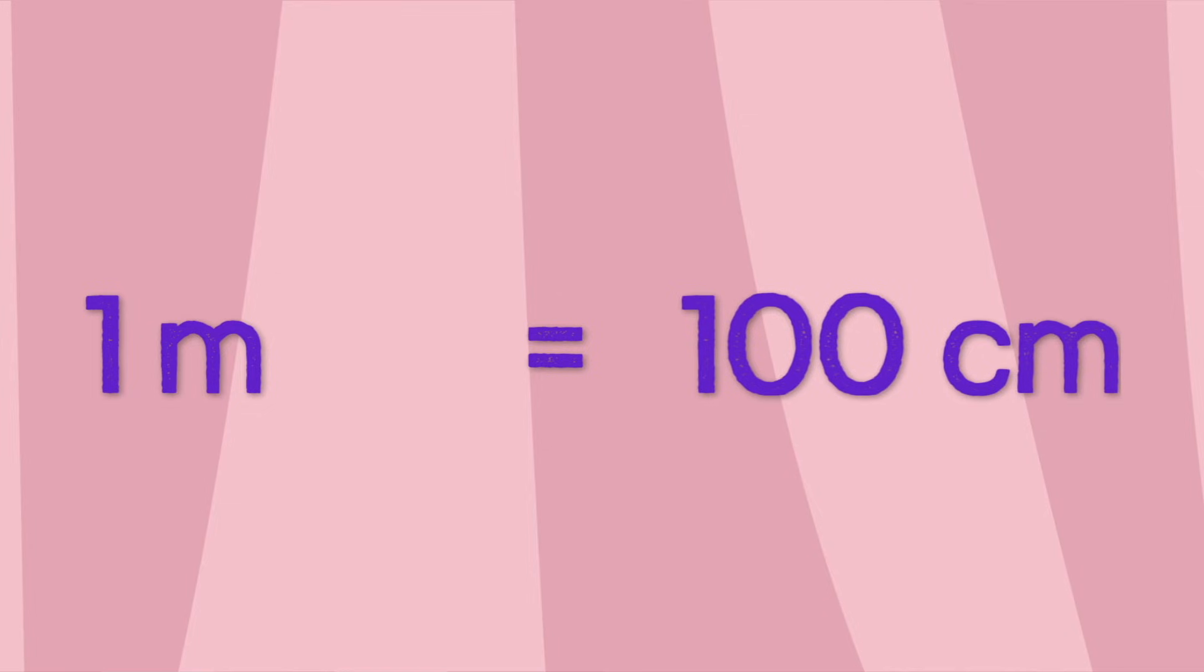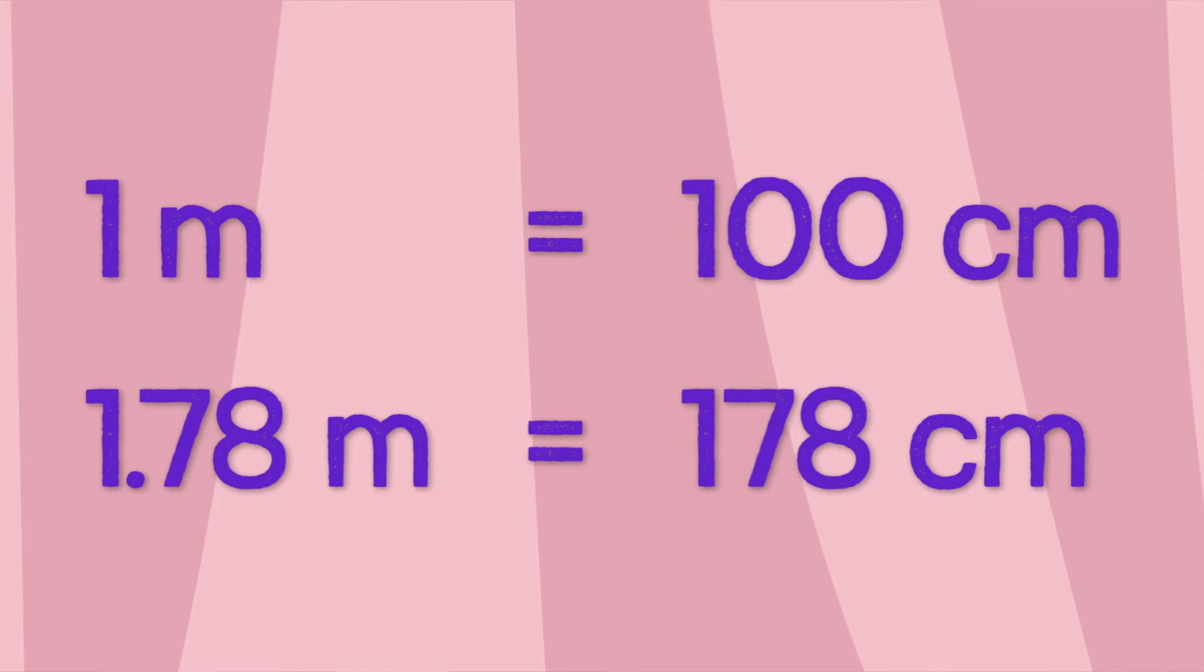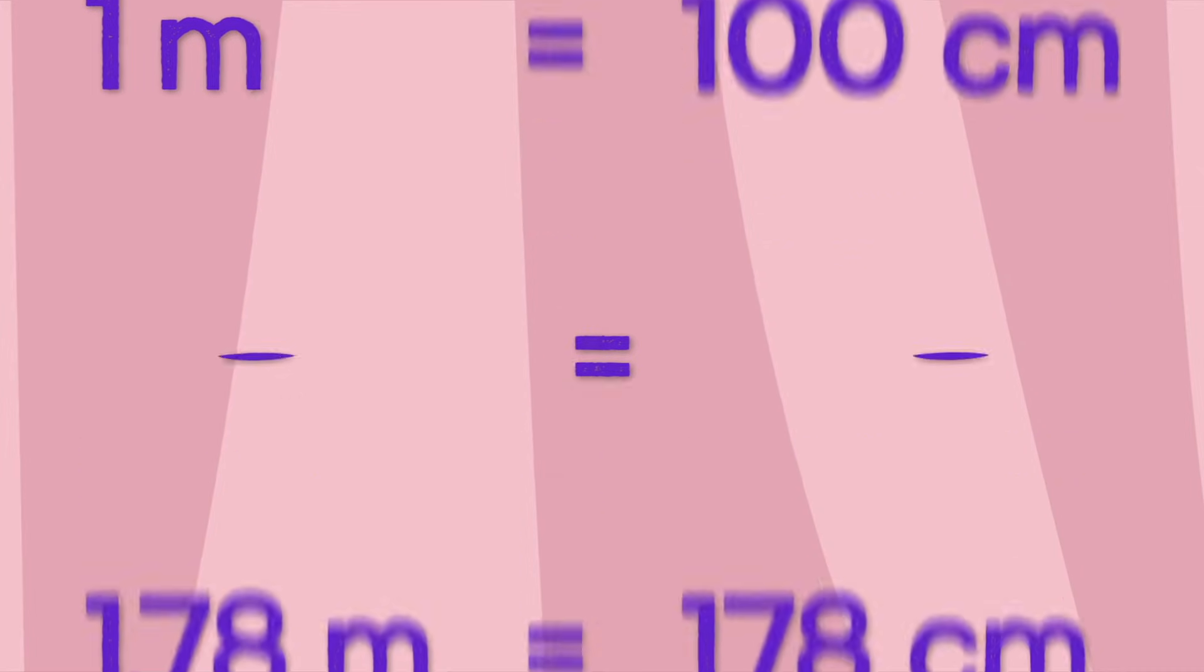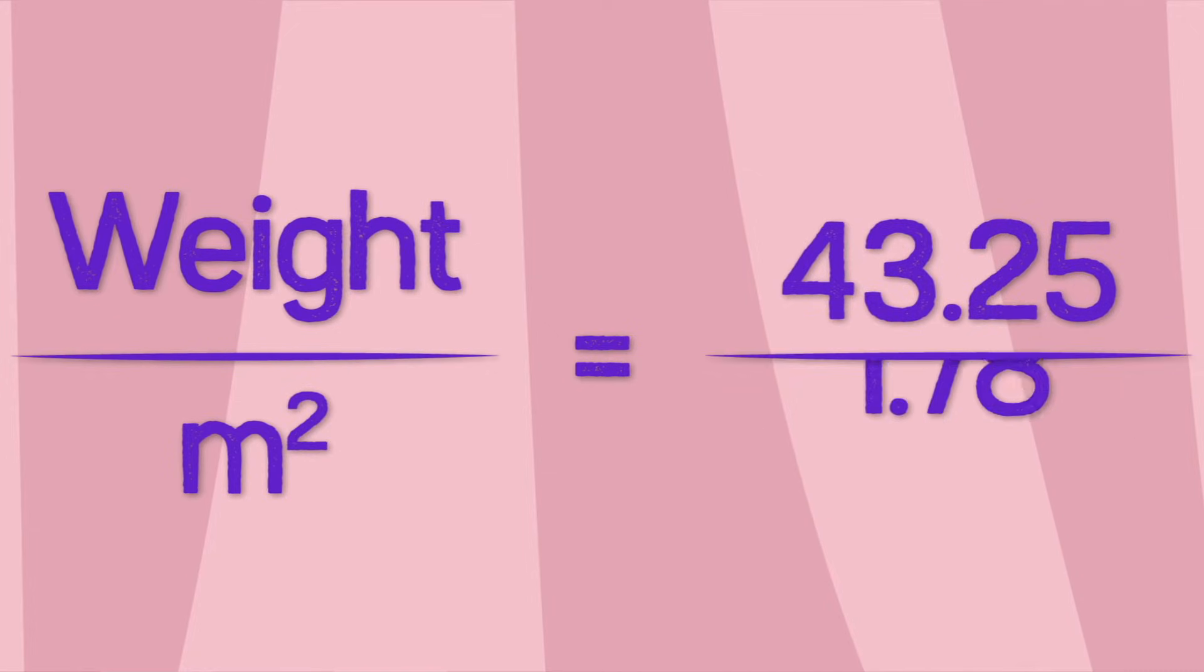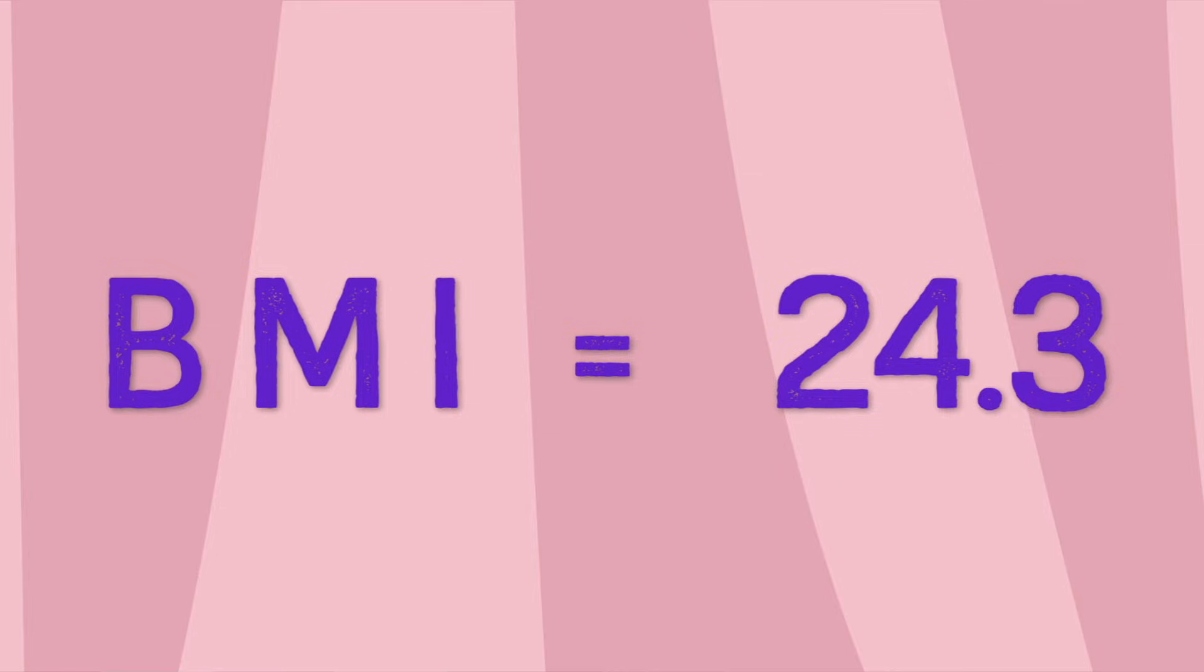Remember, one meter is equal to 100 centimeters. So it's easy to convert your height from centimeters to meters. Now divide your weight by height once, and then divide it by height a second time. This is your BMI.